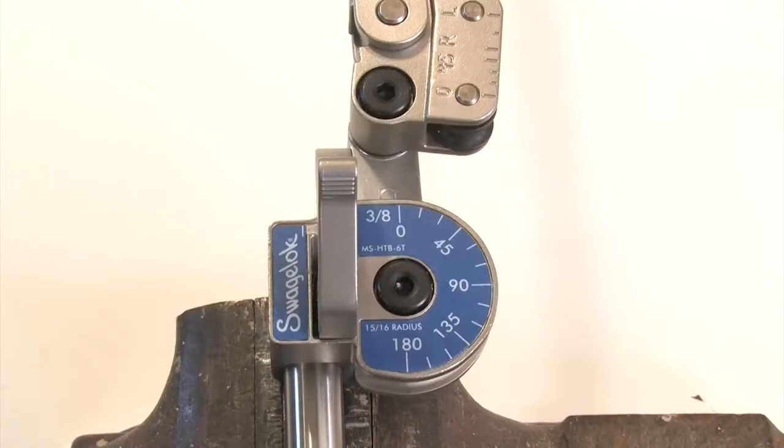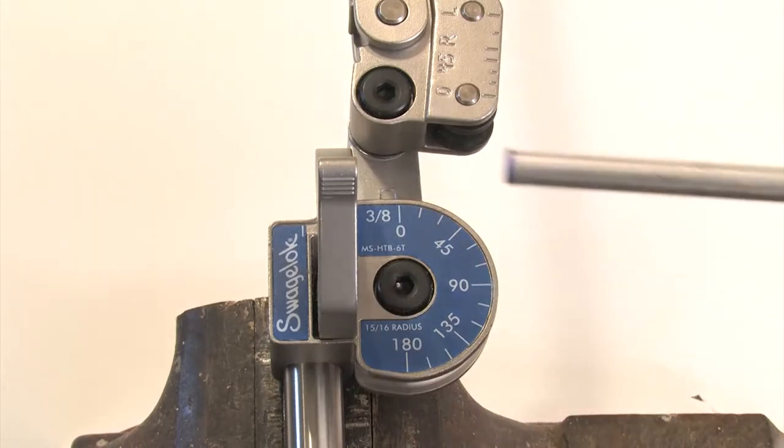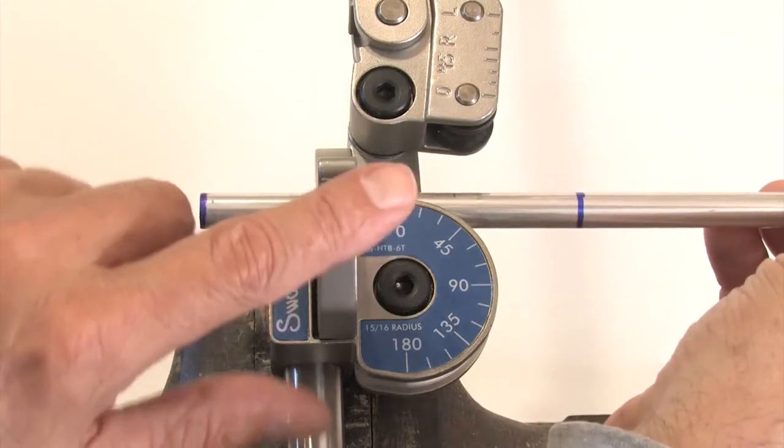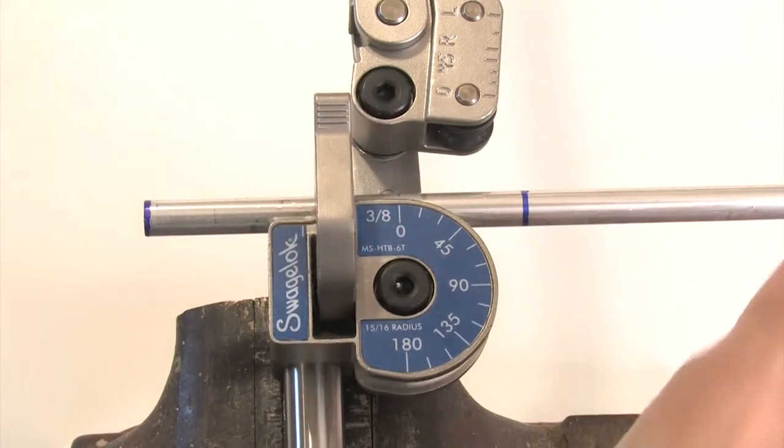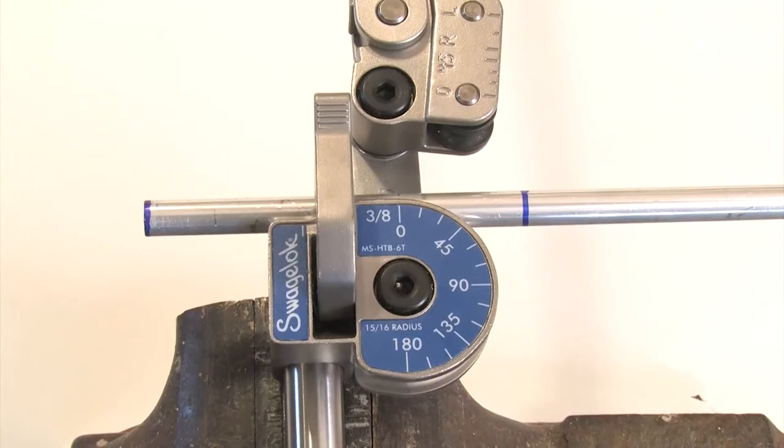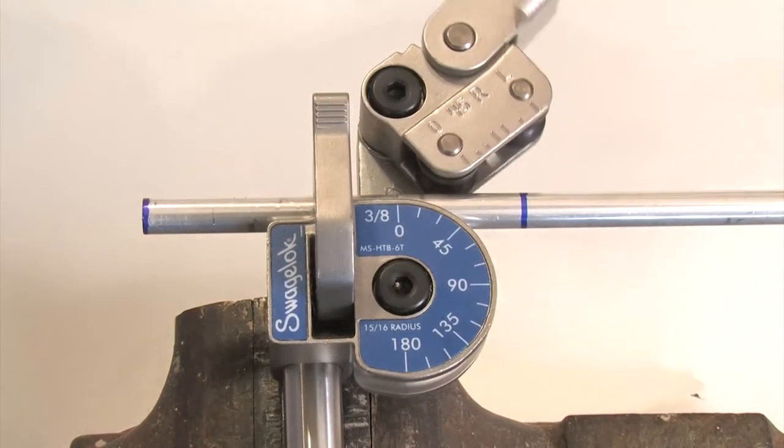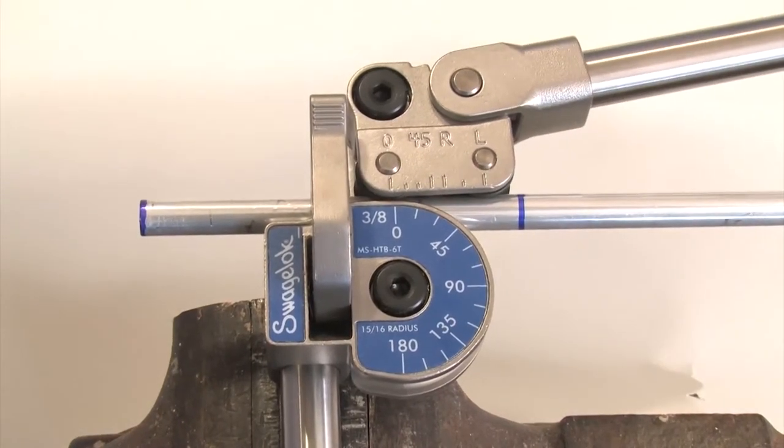Placing the bender in a vise is often the easiest way to make an accurate bend. Place the tube in the bender, with the reference mark to the left of the latch. Latch the tube lightly, just enough to hold it in place. Lower the short handle until the roller dies touch the tube.